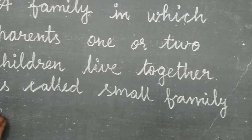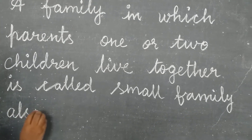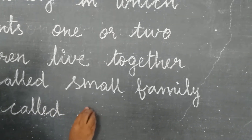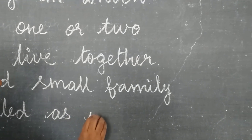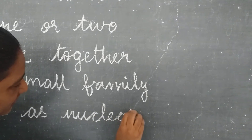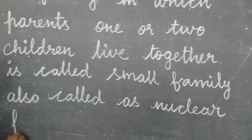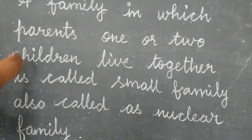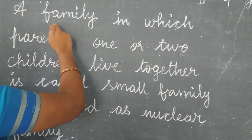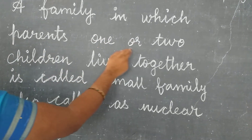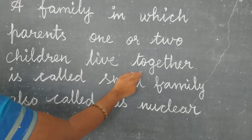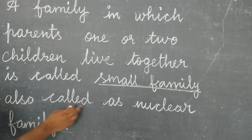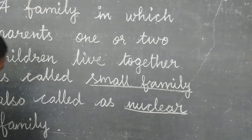Small family is also called nuclear family. So, a family in which parents and one or two children live together is called small family, also called as nuclear family.